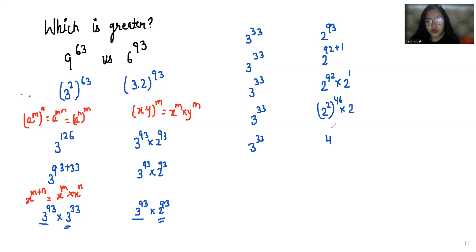And we can write it as 4 power 46 times 2. Now if we compare both sides, the base here is 3 and the base here is 4. The power is 33 here and 46 here, and we also multiply by 2 on the right hand side.